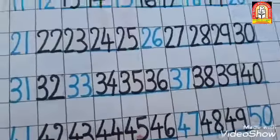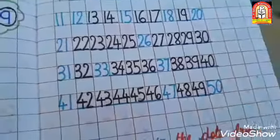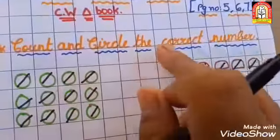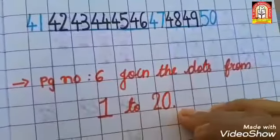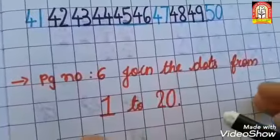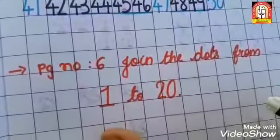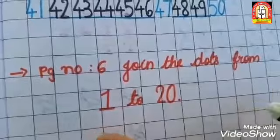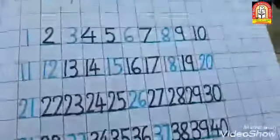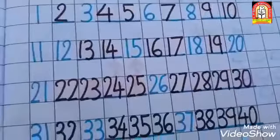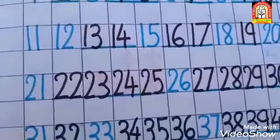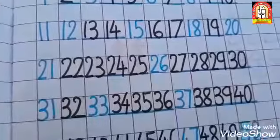So what did we learn today? Page number 5: count and circle the correct number. Page number 6: join the dots from 1 to 20 — you have to finish page number 6 by yourself. And page number 7: fill up. You have to finish this whole homework and learn too. Thank you.